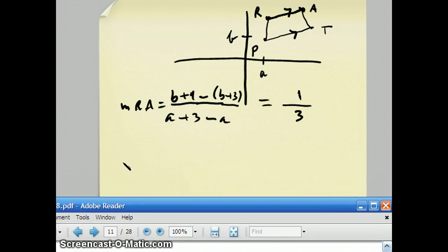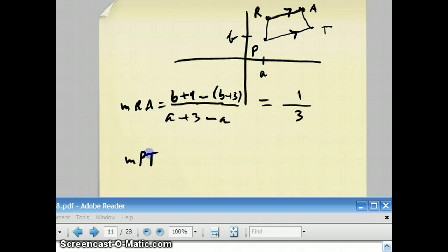Well, for PT, the Y coordinate of T is B plus 2, the Y coordinate of P is B. The X coordinate of T is A plus 6, the X coordinate of P is A. So I end up with 2 over 6, which equals 1 third. So they are equal, which means those two things are parallel.